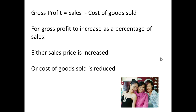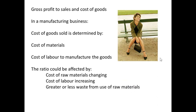The gross profit equals the sales minus the cost of goods sold. If the gross profit is going to increase as a percentage of sales, there are two things which have probably happened: either the sales price has increased, or the cost of goods sold has been reduced in some way. So gross profit to sales and cost of goods is a significant factor.